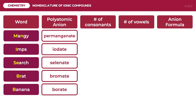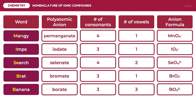For the second mnemonic device, the same procedure will be used. With these mnemonic devices, the number of anions that need to be memorized will be reduced. Just remember the mnemonic word and count the consonants and vowels.